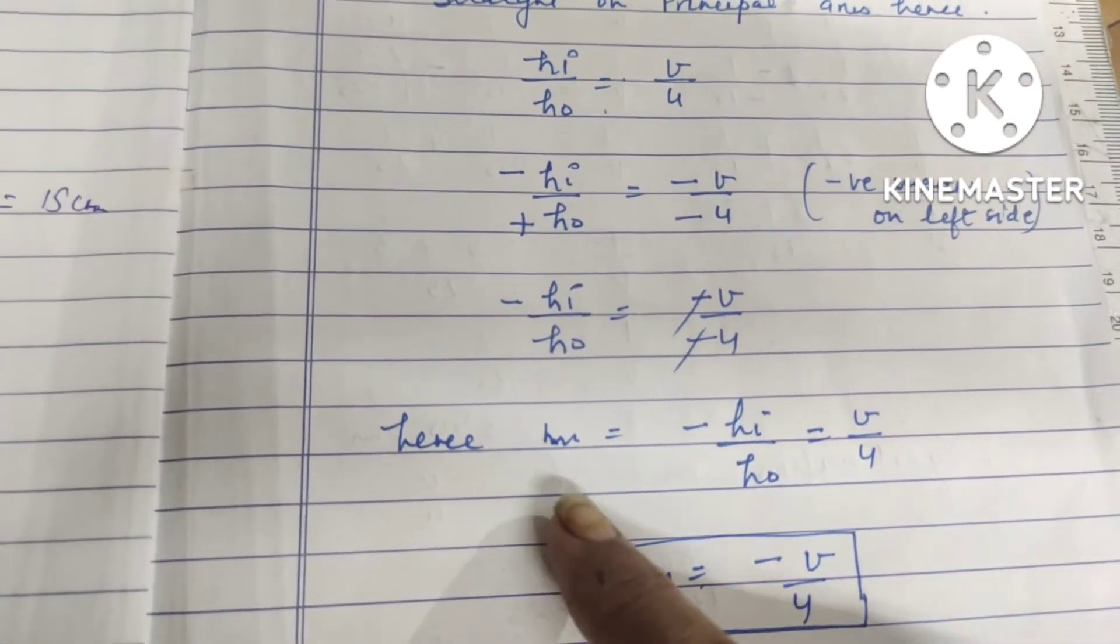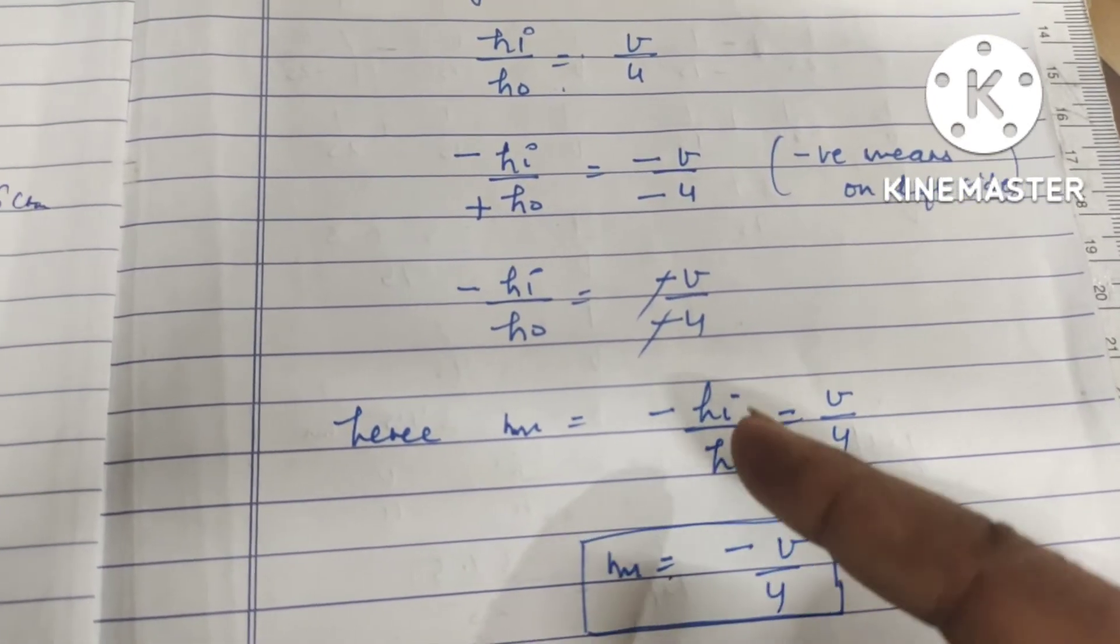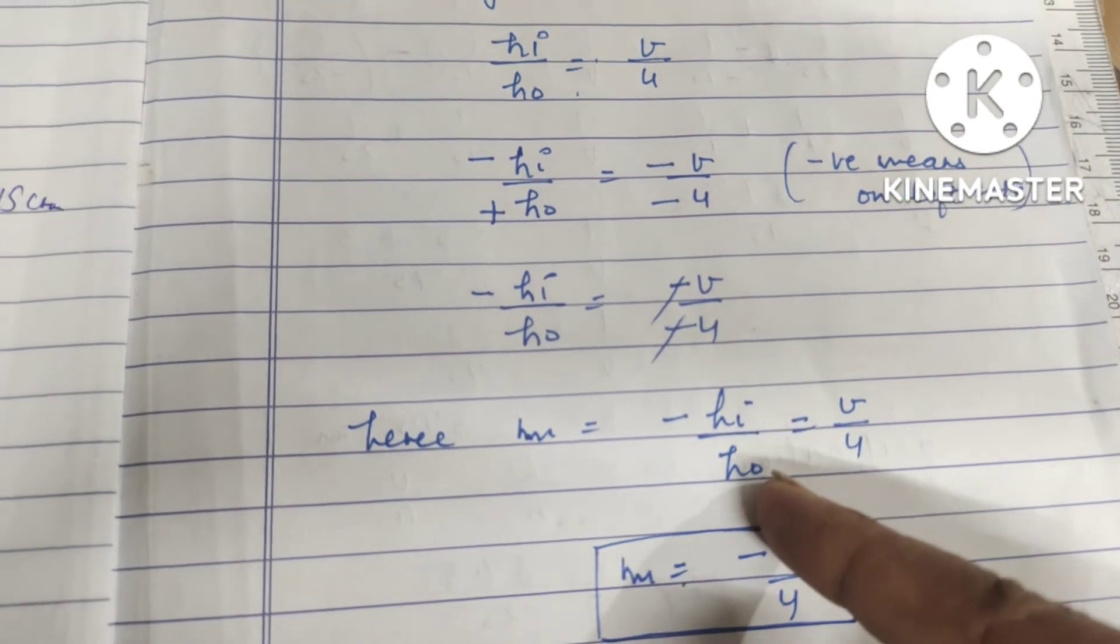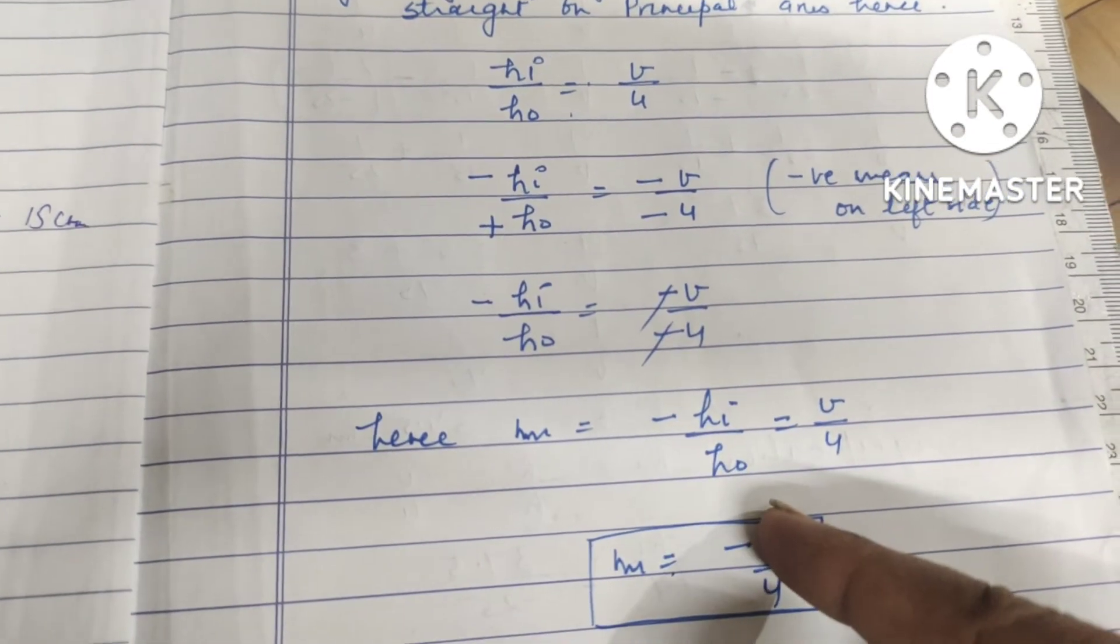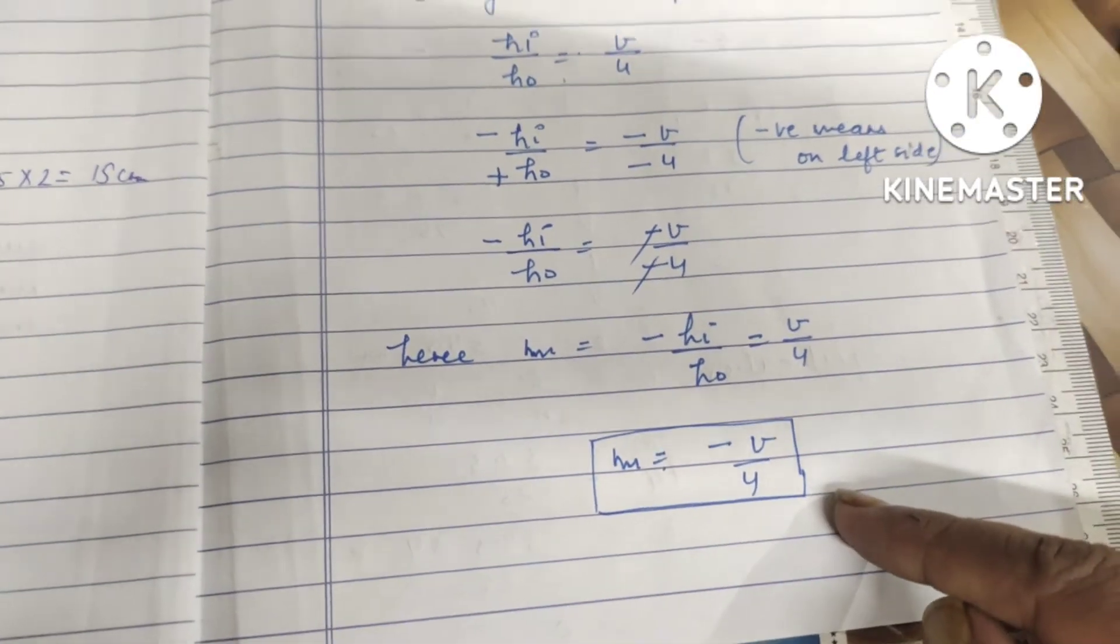Next, if we cancel both, then only this negative sign is remaining. So we can say that the magnification m equals minus hi upon ho, where hi is height of an image upon height of an object, or m equals minus v upon u. I hope it is clear.